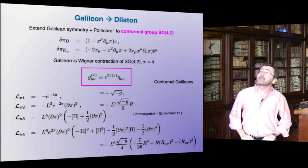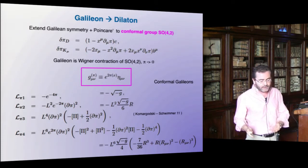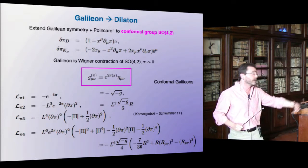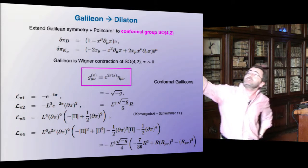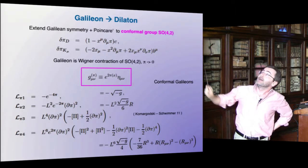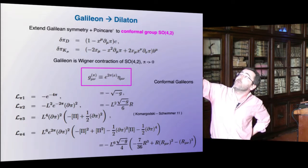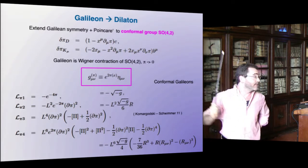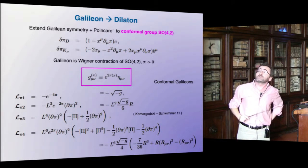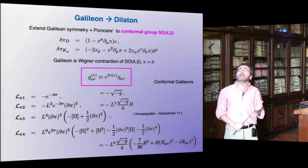I told you the Galilean is related to the conformal group — to a dilaton. The statement is that the Galilean group, which is Poincaré plus these symmetries, is just a contraction of the conformal group — it's a limit of the conformal group. You can see it because these are the nonlinear transformations of a dilaton under dilations and special conformal transformations. In the limit where π is small — π much smaller than 1 — you can drop certain terms and you are back to the symmetries I was talking about: a shift and a shift by something proportional to x_μ. So the Galilean is a limit of a dilaton, and that's why I want to talk about dilatons and nonlinear realizations of the conformal group.